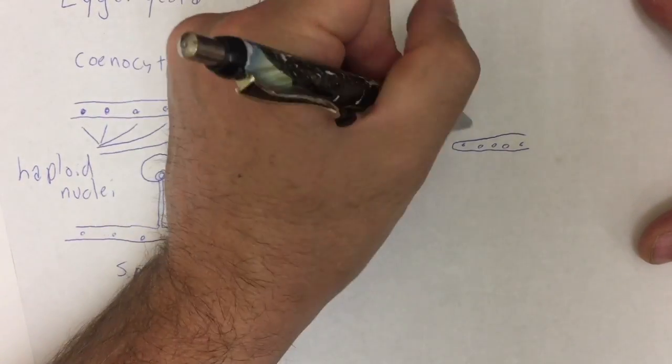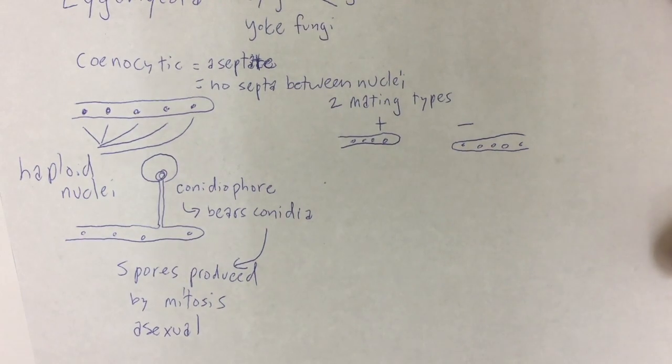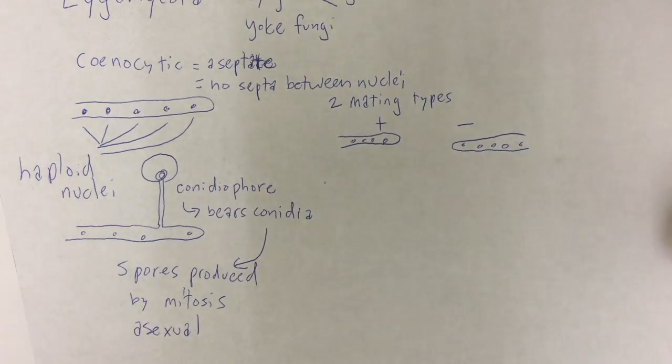And they look the same. They don't look like male and female. So we just call them plus and minus to indicate that they're not really male or female. They're just compatible mating types.